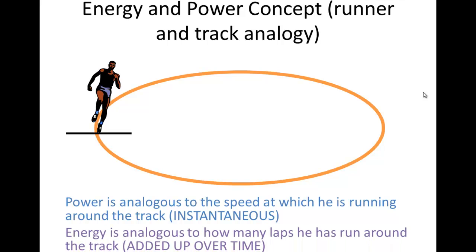Energy is analogous to how many laps he has run around the track. Energy is sort of like power added up over time. If he was running 20 miles an hour, and the track was one mile, and he kept running 20 miles an hour, he could run 20 miles in one hour. So he'd run 20 times around the track.